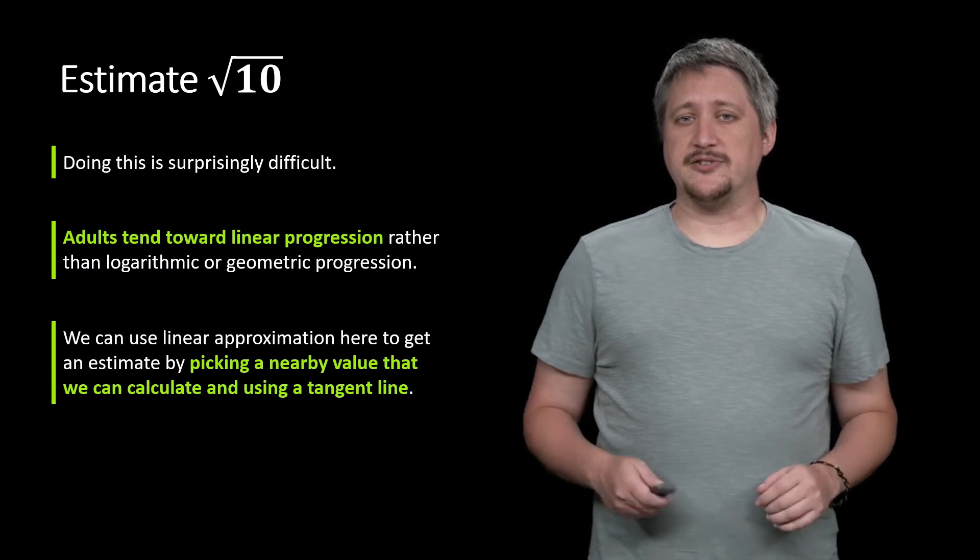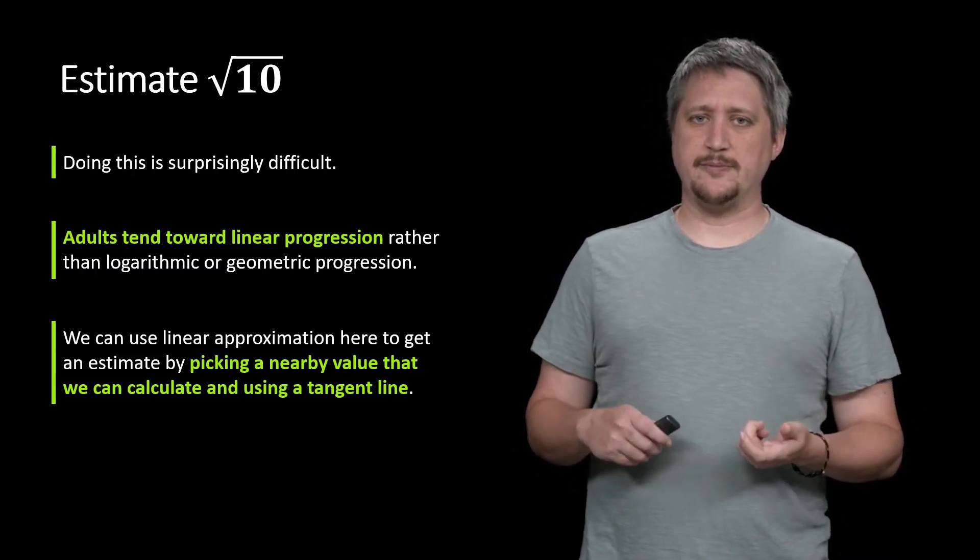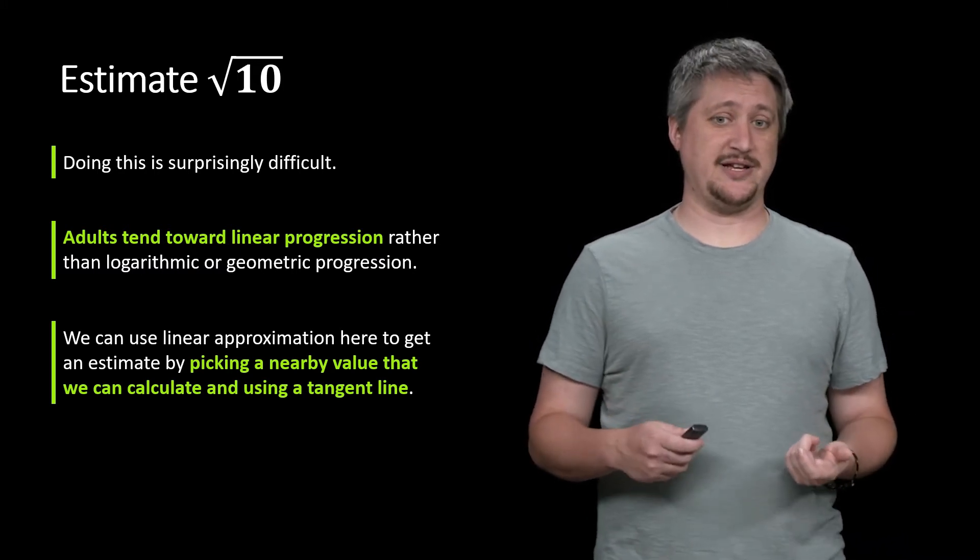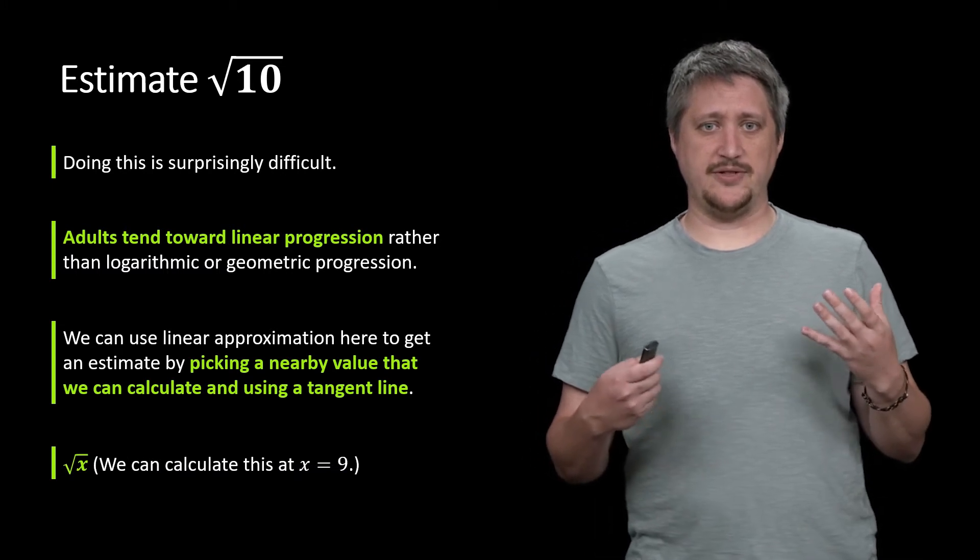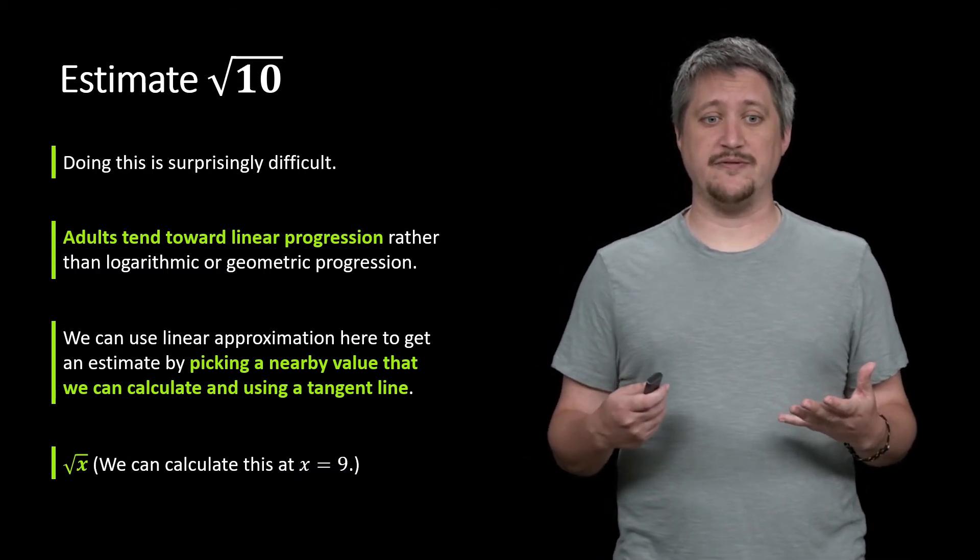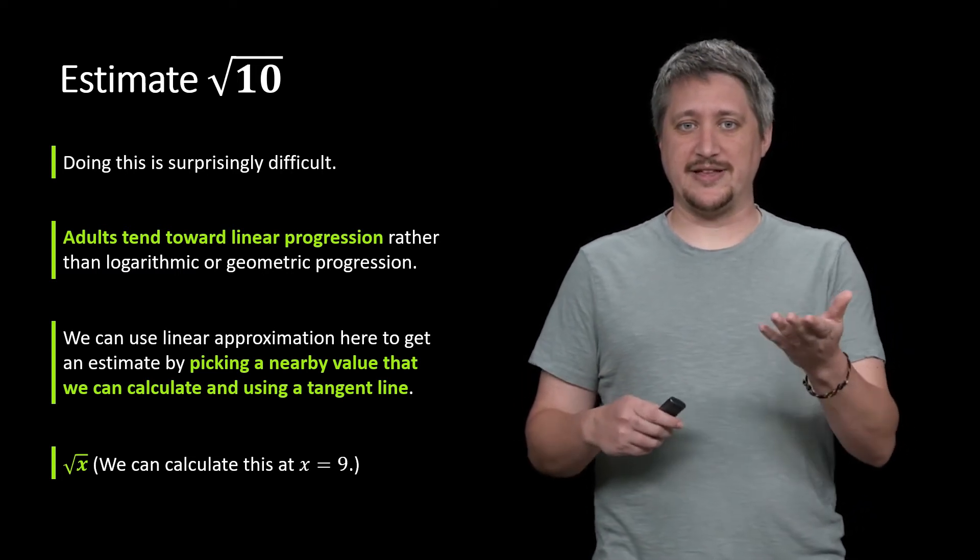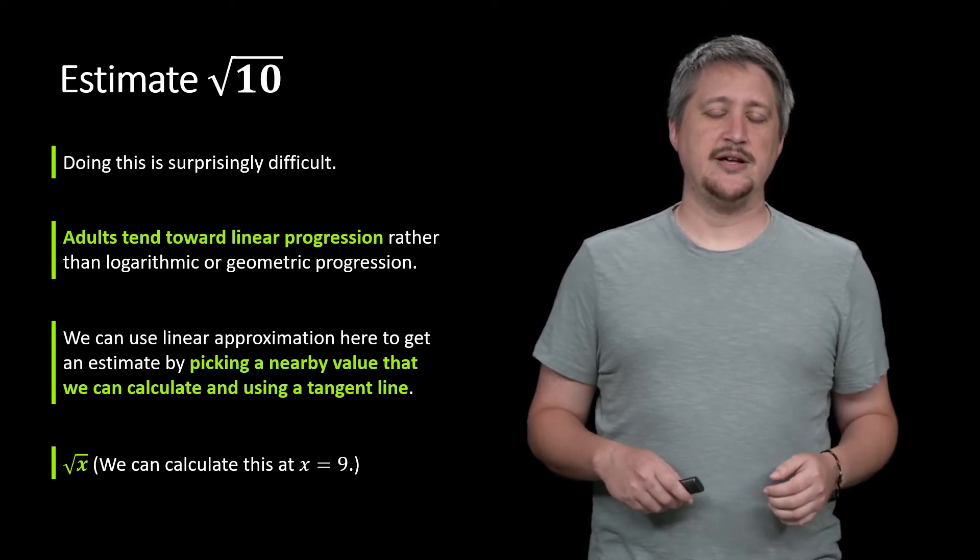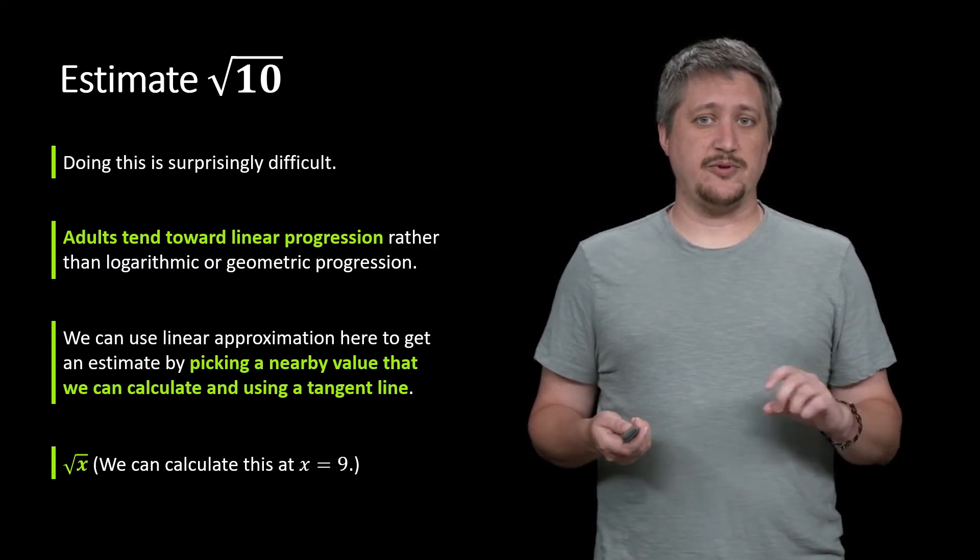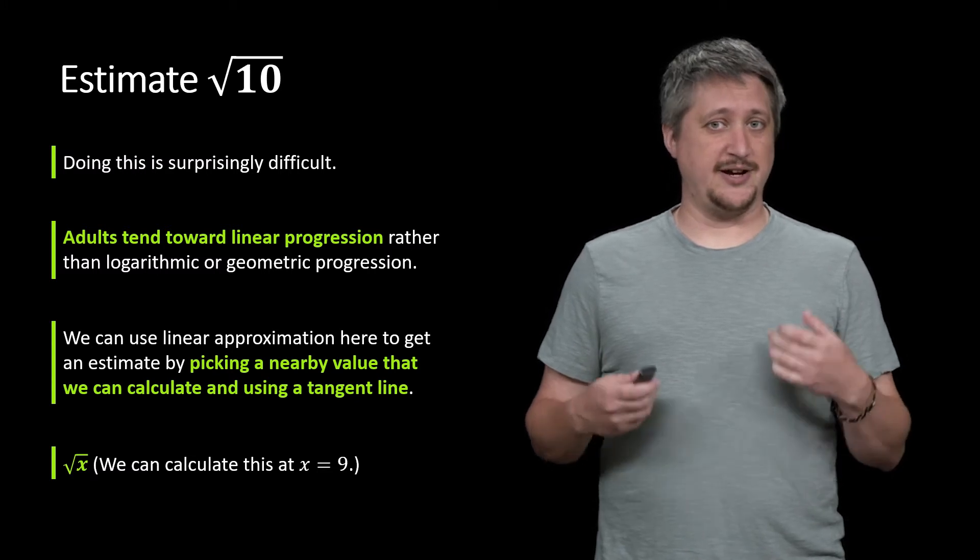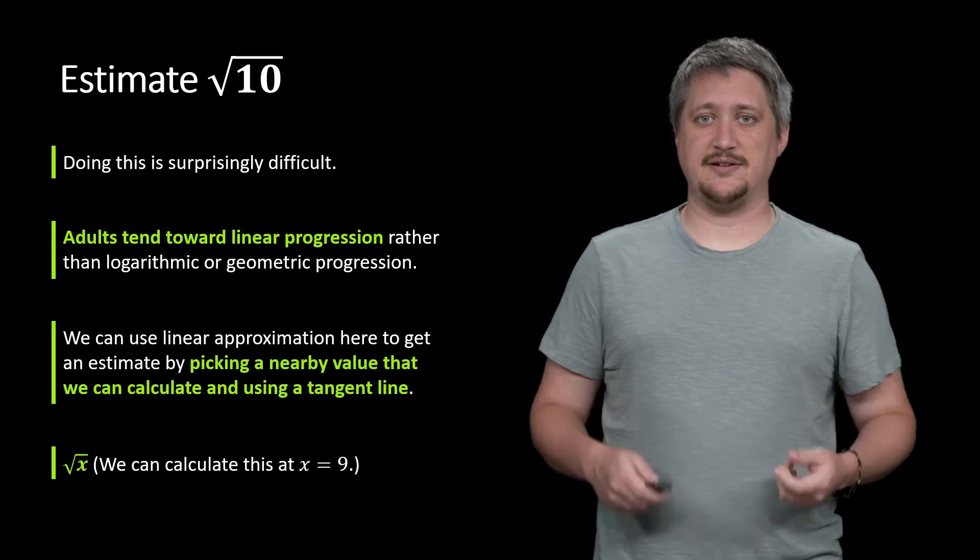We can use linear approximation for this. The way we would do that is we want to pick a nearby value that we can calculate nicely and then use a tangent line. As a starting spot, we would think of this as being a function, the square root of x. And we want to know for when x equals 10. But we can calculate this at x equals 9. If we plug in 9, we know the square root of 9 is 3. So this is a nearby point, 9, that is easy to calculate.